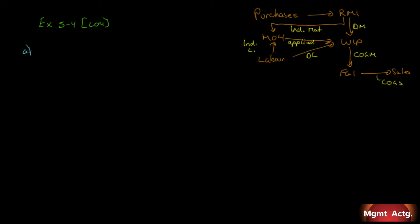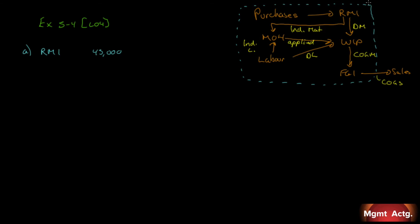Transaction A: $45,000 in raw materials was purchased on account. Purchases go into raw materials inventory, so raw materials inventory increases by $45,000 — that's a debit. We need an offsetting balance sheet account, so we use accounts payable for $45,000. That's the journal entry for A.